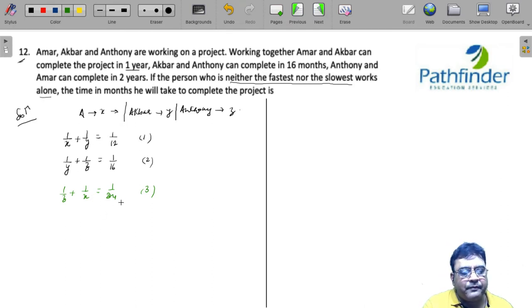And whenever you have these kind of equations, just add up all the three equations. If you add up 1, 2 and 3, you will get 1 by X plus 1 by Y plus 1 by Z. The LCM is 48. So 4 plus 3, 7 plus 2, 9 by 48. So you will get 9 by 96.